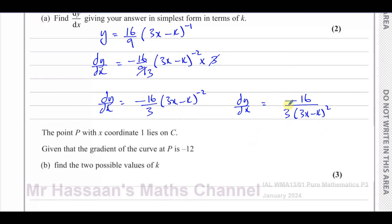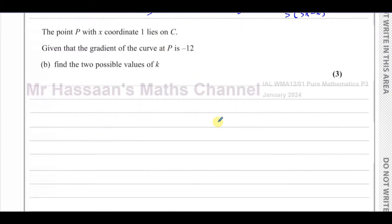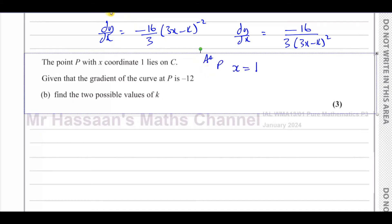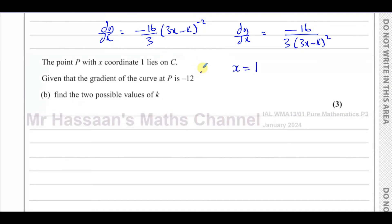This form is a bit nicer for substituting values in. The question says the point P with x-coordinate 1 lies on the curve C. Given that the gradient of the curve at P is minus 12, find the two possible values of k. So at P, x equals 1, and the gradient dy/dx equals negative 12.